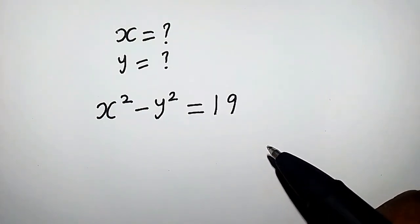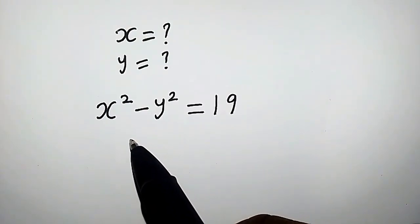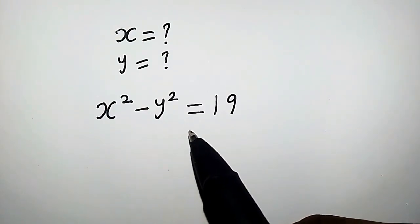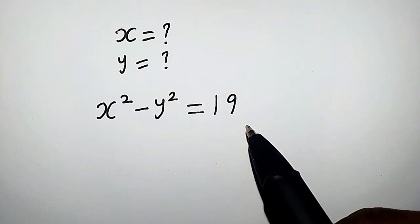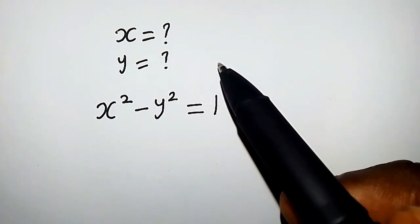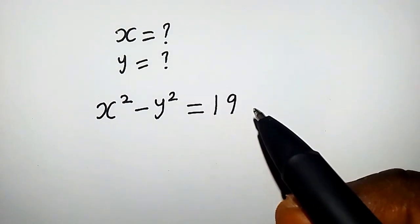Hello, in this video we solve a nice algebra problem: x squared minus y squared equals 19. How do we find the value of x and y?